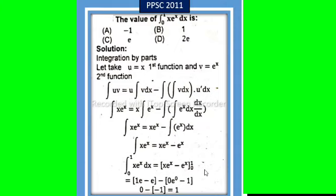By applying limits 0 to 1, at x equals 1: 1 times e^1 equals e, minus e^1 equals e. So 1e minus e equals 0.